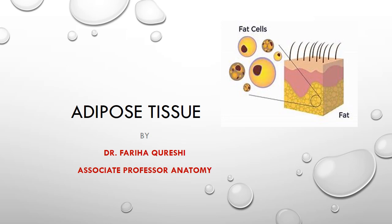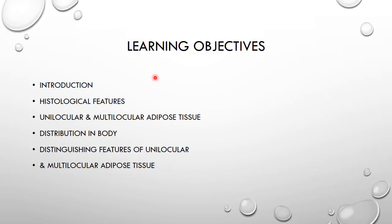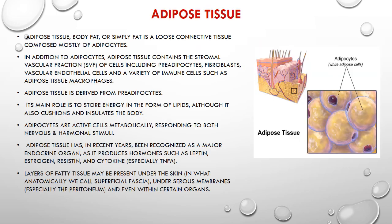Assalamu alaikum, hope everyone is fine and safe at home. Today's topic will discuss the histological features of two types of adipose tissue: the unilocular and the multilocular adipose tissue, how they are distributed in the body, and what are their distinguishing features and differences. Adipose tissue is one form of special connective tissue.